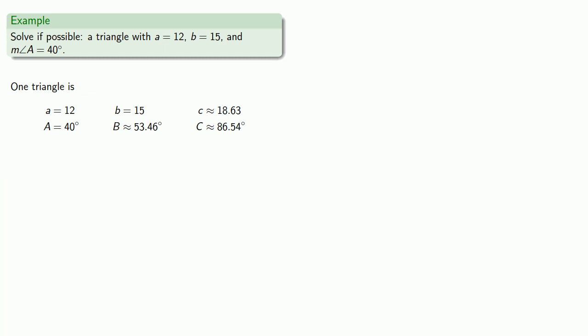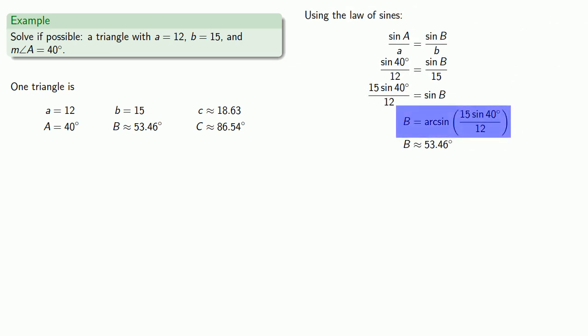But wait! There's another solution. When we found our first angle, we had to take the arcsine of a value. But our power tool only gave us one value for the arcsine, but there are more. Remember that if sine of theta is equal to z, then sine of 180 degrees minus theta will also equal z.